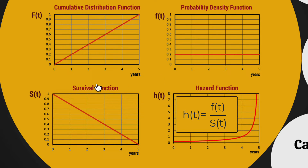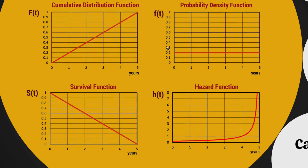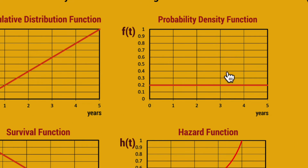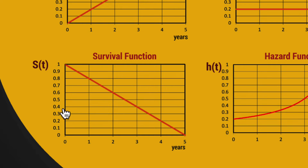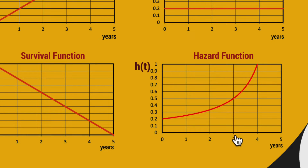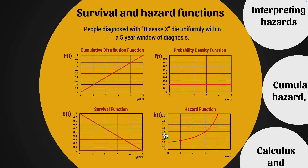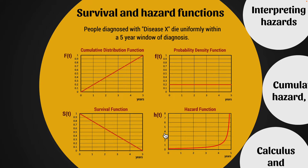The way we calculate the hazard is simple enough — it's the probability density function divided by the survival function. At time three, the probability density function is 0.2. Dividing 0.2 by the proportion of people alive, which is 0.4, gives us 0.5. So at time three, the hazard is 0.5. But how do we interpret that? What does 0.5 actually mean?